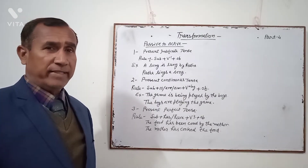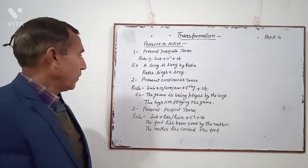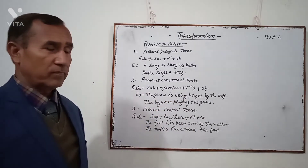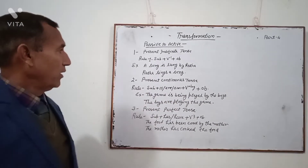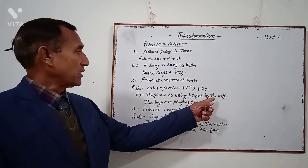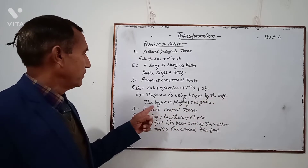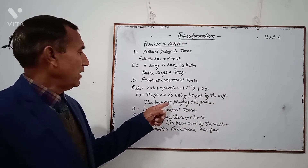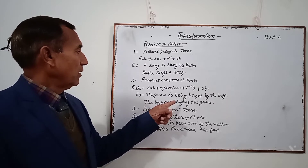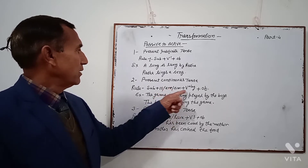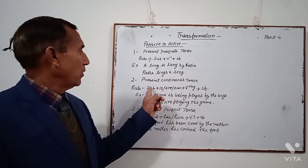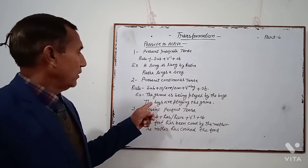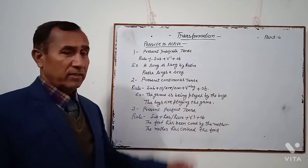Present Continuous Tense. The rule is: Subject + is/are/am + V-ing + Object. The sentence in Passive is: 'The game is being played by the boys.' Now the boys will be the subject. According to the subject, we use 'are', then V-ing form: 'playing', then object: 'the game'. So the Active sentence is: 'The boys are playing the game.'